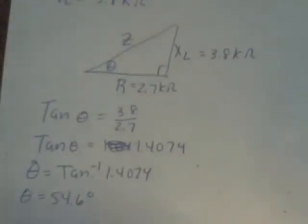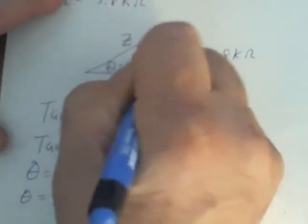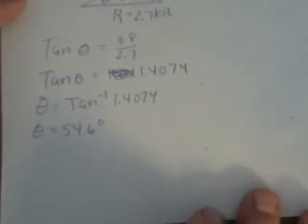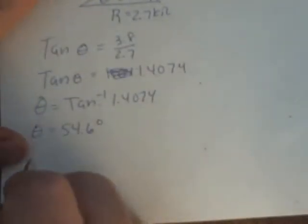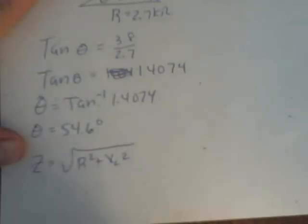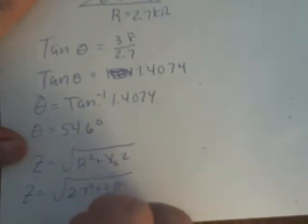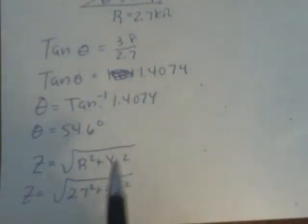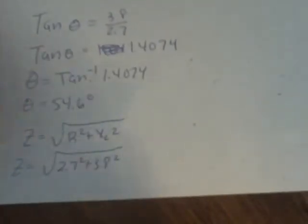So then my angle, anytime you're finding the angle, you always do the inverse trig function. I'm going to do tan inverse of that, and I get 54.6 degrees. So there's my angle. So I've filled in my two sides and my angle. The last thing I need to find is z, and as always, if you can do Pythagorean theorem, I just think it's much more user-friendly. So z is the square root of r squared plus x sub l squared, which is the square root of 2.7 squared plus 3.8 squared. Since r and x sub l are already measured in kiloohms, I can square these without worrying about the prefix, knowing that my final answer is also in kiloohms.